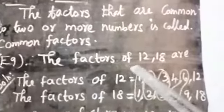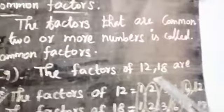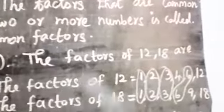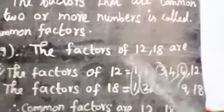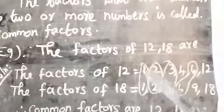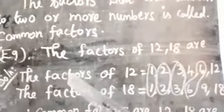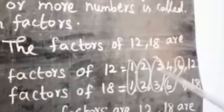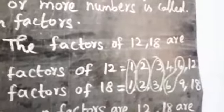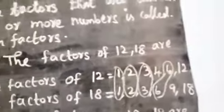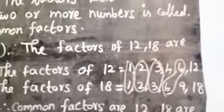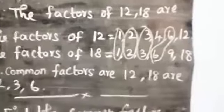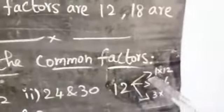Now look at the example — the factors of 12 and 18. First, write the factors of 12. The factors of 12 are: one, two, three, four, six, twelve. Let's verify: one times twelve is twelve, two times six is twelve, three times four is twelve.